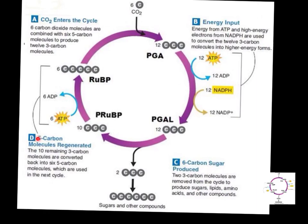Like the train leaves the station at six o'clock going 45 miles an hour — when does it get to station B? It just becomes kind of confusing. Part of the reason for the odd wording is I added letters to the diagram. These letters represent the actual biochemical name of the molecule. So these six five-carbon molecules — that's ribulose bisphosphate, abbreviated as RUBP. The twelve three-carbon molecules is PGA. All of these letters stand for different biochemical terms.